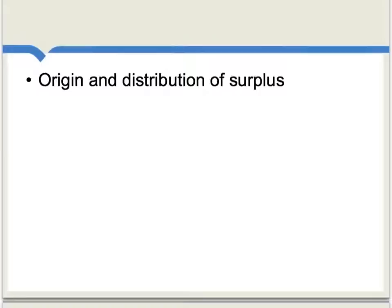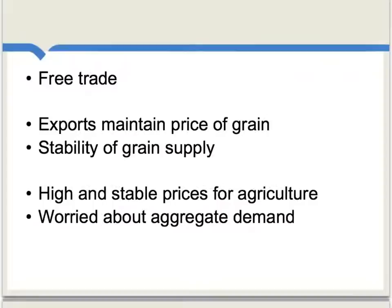Also notable in Canet and some of the other physiocrats is this notion that economics should be concerned with a theory of the origin and distribution of the surplus from an economy. This, in part, comes from Canet. It proved to be a big influence on Turgot, on Adam Smith, and above all on Karl Marx. It's another sign of just how much influence Canet and the physiocrats had.